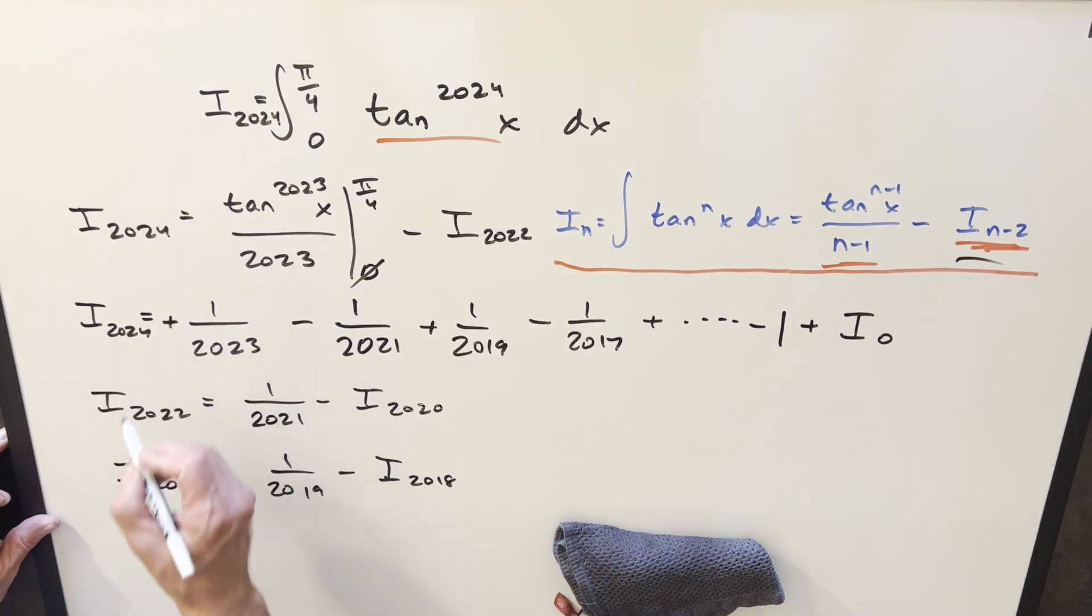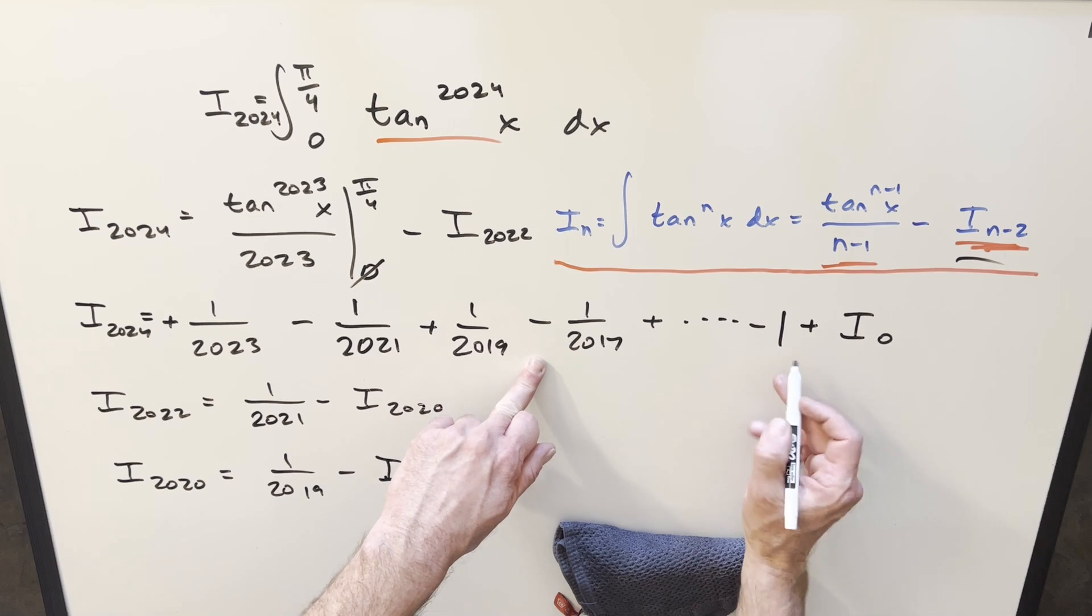One thing you need to be careful about is noticing the sign, because you're not going to keep track of it all the way down to 1. But notice for the values that are divisible by 4, you get a positive sign out front. And then for the ones that are just divisible by 2 but not by 4, those all have a minus sign.